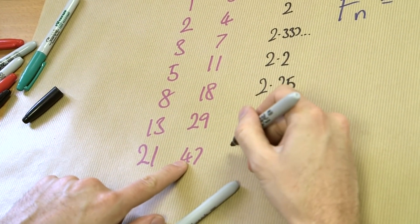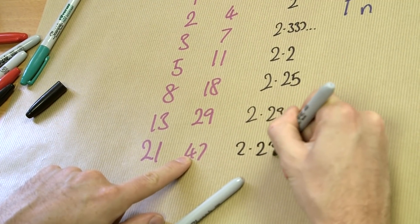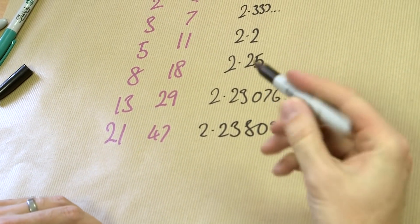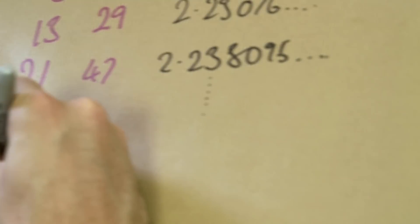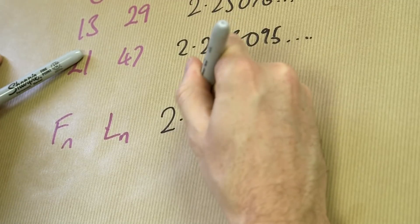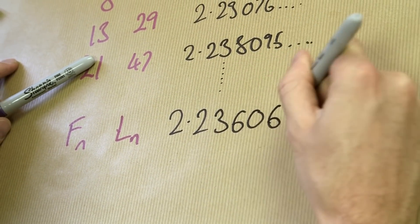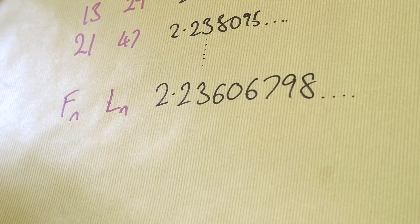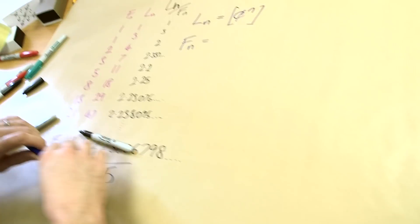47 divided by 21 is 2.238095. We are starting to hone in on this number, and ultimately for Fibonacci n over Lucas number n, we get the value 2.23606798 and plenty more. Do you recognize it? No one ever recognizes this number — lovely, lovely number. That number is the square root of 5. So the ratio between the Lucas numbers and the Fibonacci numbers is root 5.